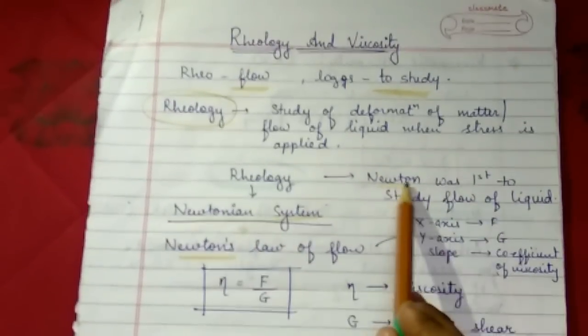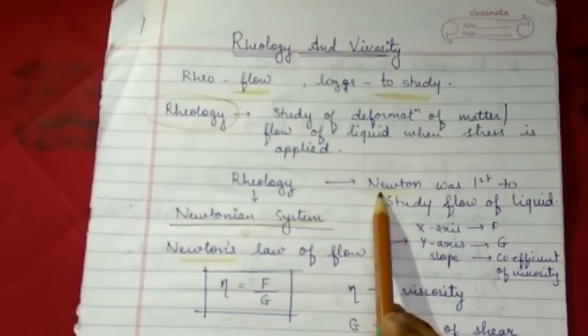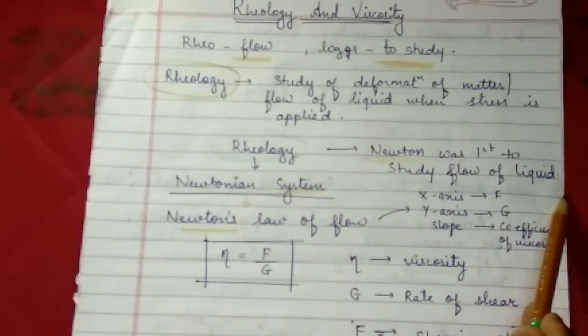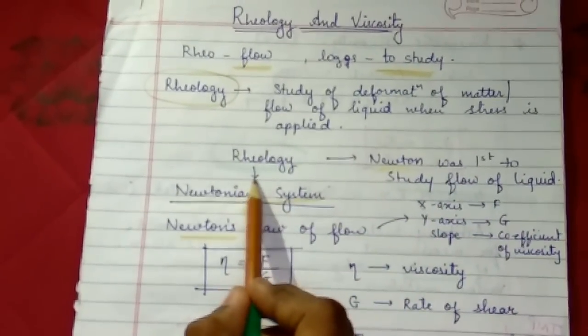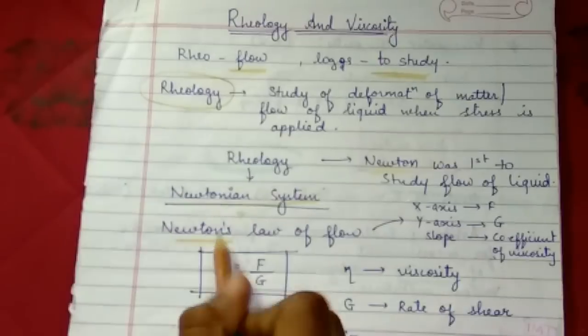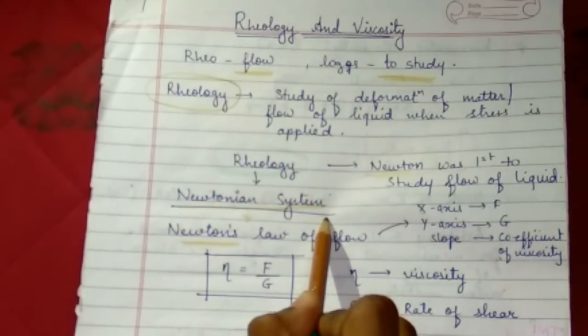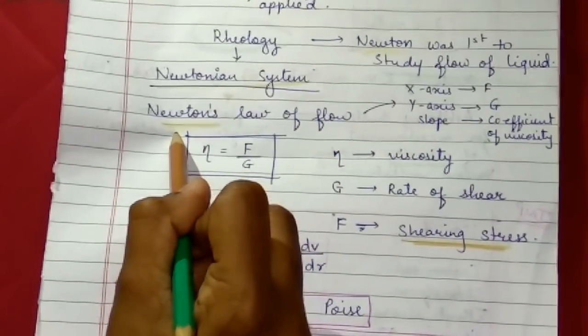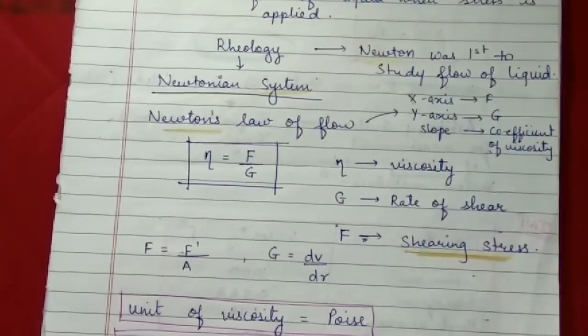Rheology was first determined by the scientist Newton. He studied the flow of liquid. If it follows Newton's law, it is called Newtonian system. If it does not follow Newton's law, it is known as non-Newtonian system.